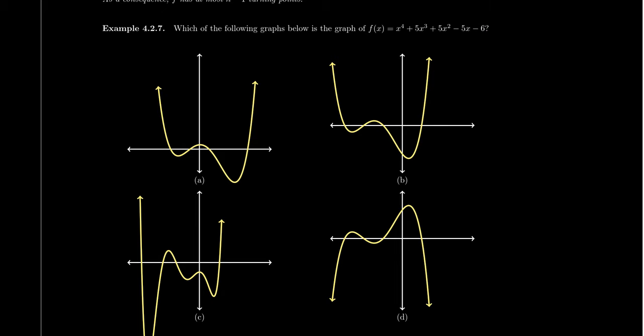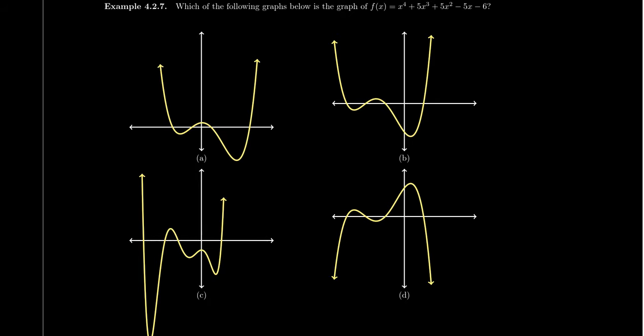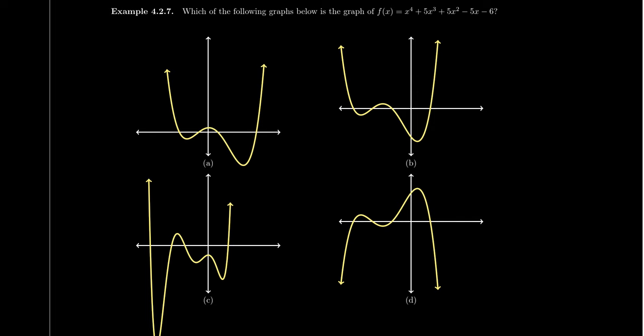Because if you have a polynomial and you plug in zero to find its y-intercept, you plug in zeros for all of the x's. But as the constant term doesn't have a zero, that's the only thing that resides. That's the only thing left over when you plug in zero to find the y-intercept. And so now let's meet our eligible bachelors today. We have four graphs that want to be matched up with f(x) right here.